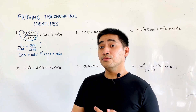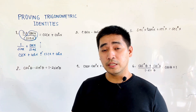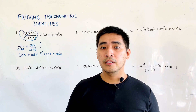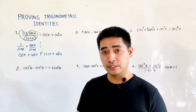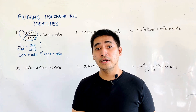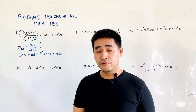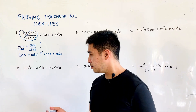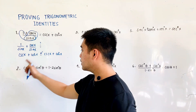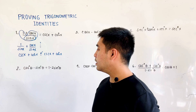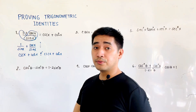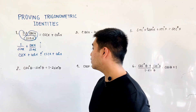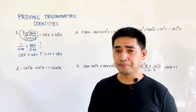Now let's go to the example where we'll use today's method: factoring. We are given: cos²θ - sin²θ = 1 - 2sin²θ.